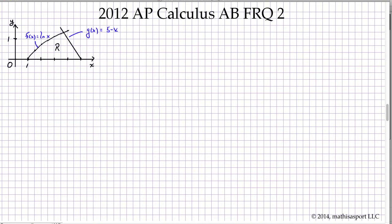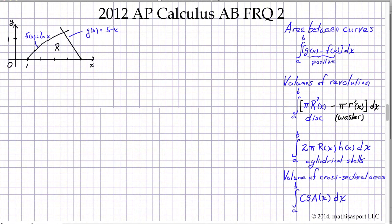We have to first find the area of the region, then we're going to make a cross-sectional volume, and then we're going to answer a slightly trickier question about the area. I've included all of the formulas that relate to areas and volumes. Let's turn to part A, where we're supposed to find the area of the region.